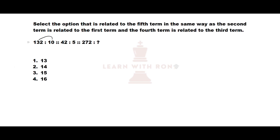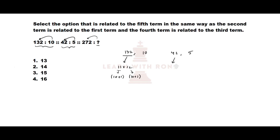Next question: 10 is related to 132, 5 is related to 42, and we need to find a number related to 272. Take 132 and 10 first: 132 = 11 × 12, where 11 is 10+1 and 12 is 10+2. Now for 42 and 5: 42 = 6 × 7, where 6 is 5+1 and 7 is 5+2. So the pattern is: for value n, the related number is (n+1) × (n+2).